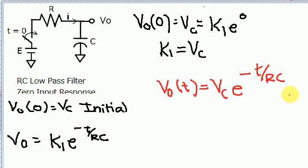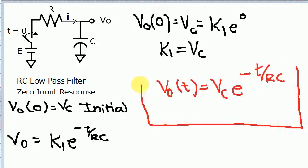So the final equation is V₀(t) equals VC times e^(−t/RC). This is the final equation for the zero input response to the RC low-pass filter. My next video will cover the RC low-pass filter again, but this time for the zero state response, which uses the forcing function and not an initial condition.